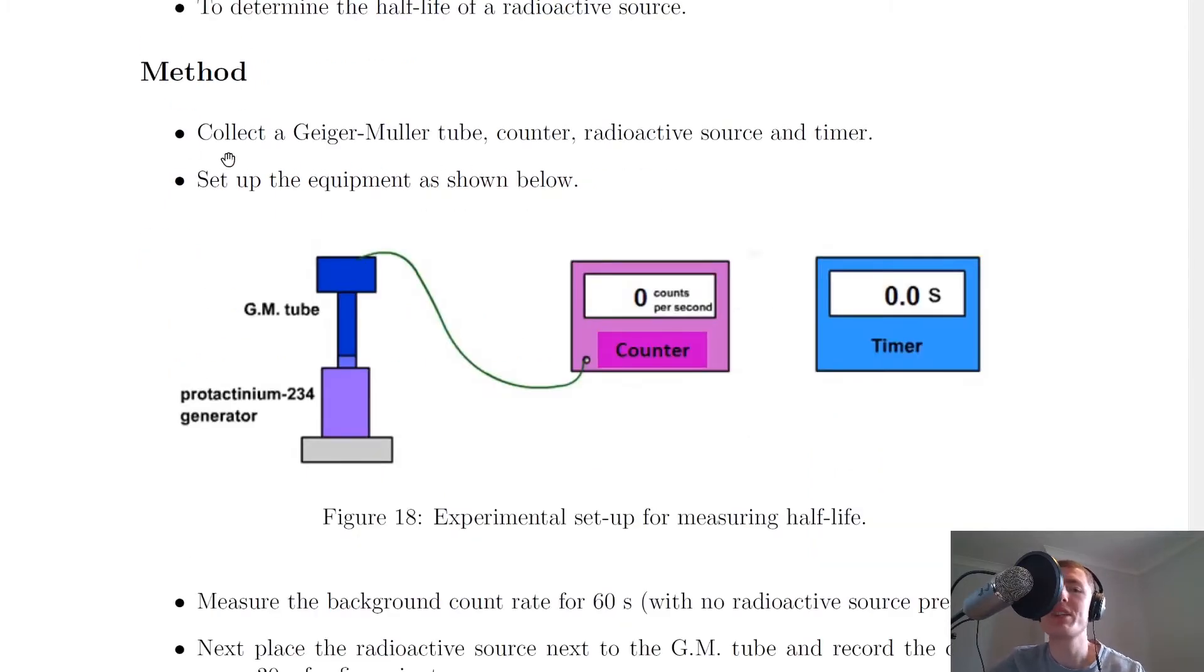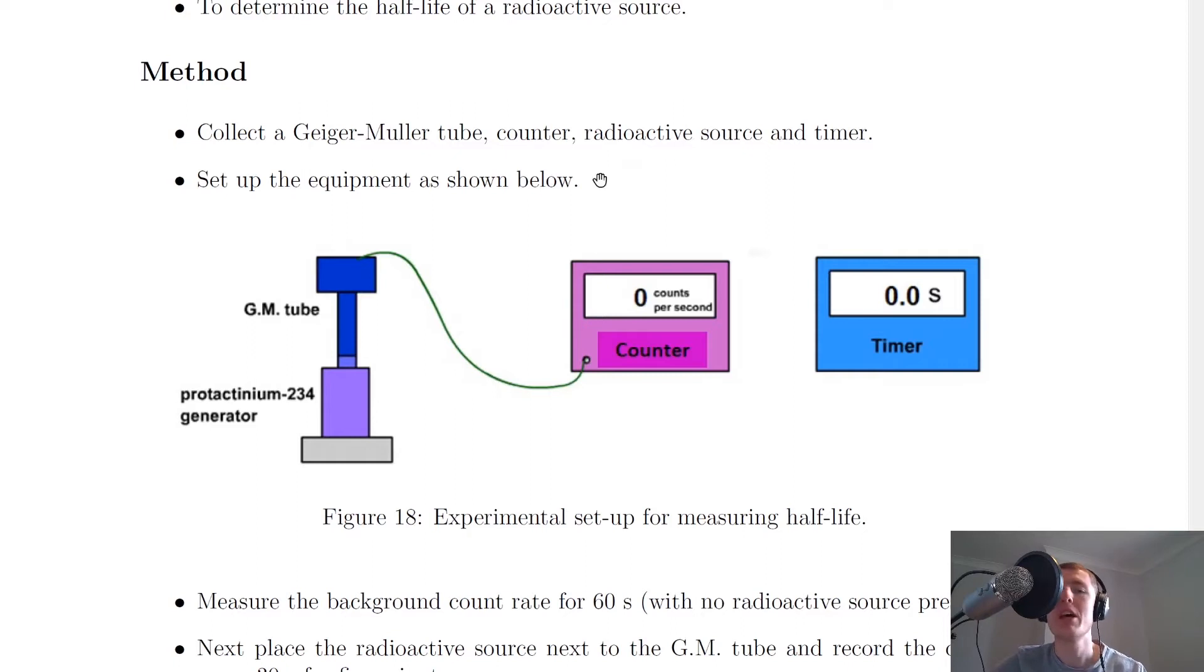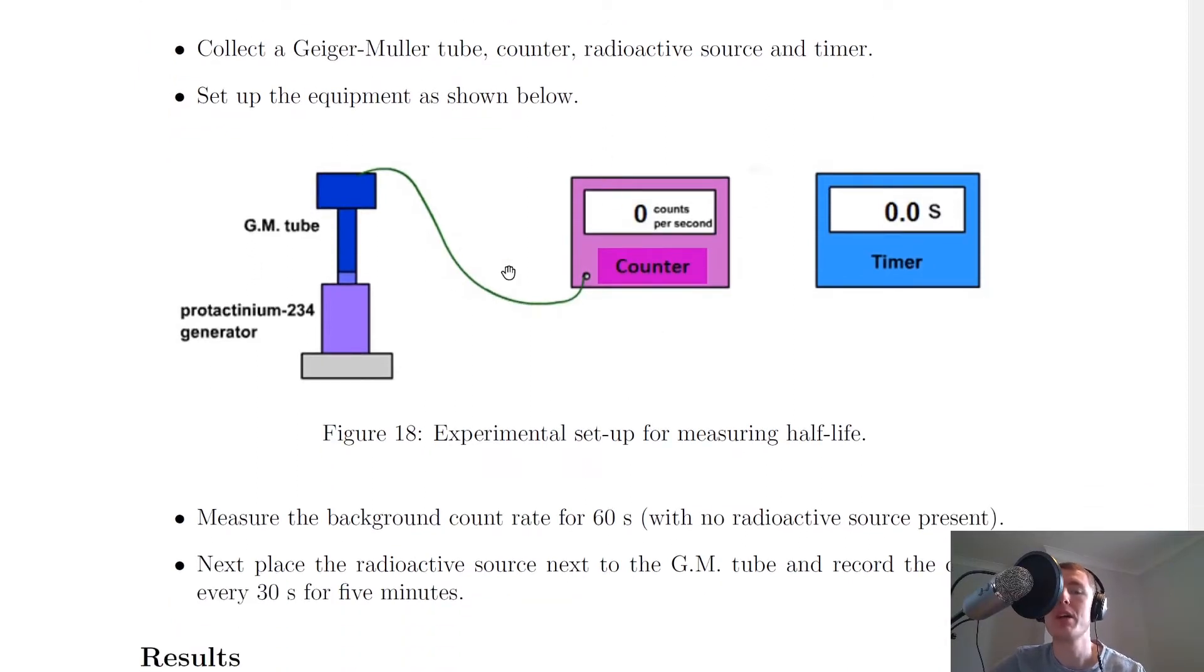For the method you would collect a Geiger-Müller tube, counter, radioactive source and a timer. You would then set up the equipment as shown below here. So you've got your counter measuring counts per second, your timer measuring seconds, your Geiger-Müller tube and your source. And in this example we've got a source of protactinium-234.